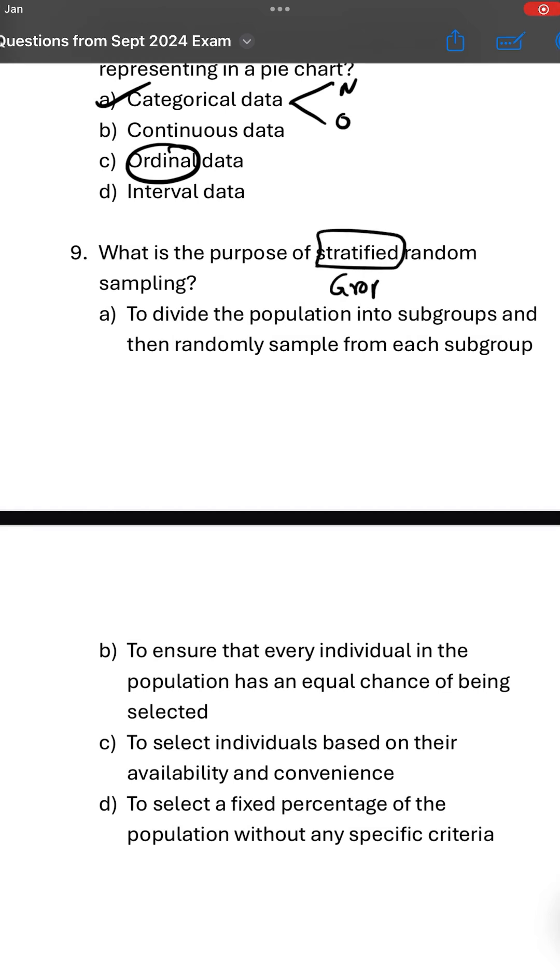What is the purpose of stratified random sampling? Stratified is grouped. We divide the population into multiple groups and then take out the samples. Option A: to divide the population into subgroups and then randomly sample from each subgroup - which is the perfect answer.